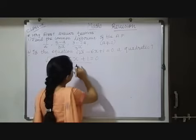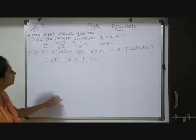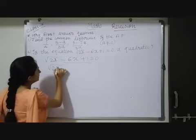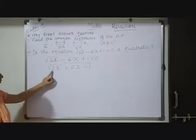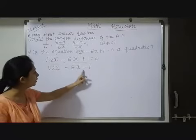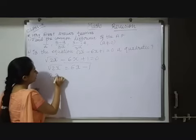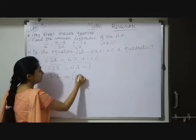I will shift this third term towards RHS. So here children will get root 2X equals 6X minus 1. Now to remove this root, what should I do? Do squaring on both sides. So while I will do squaring on both sides, here we will get root and square will cancel out.